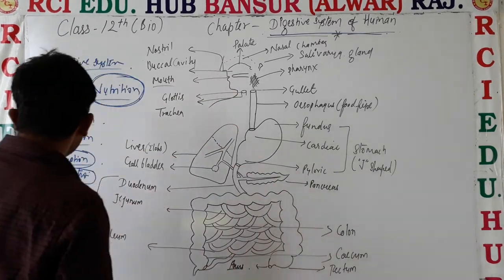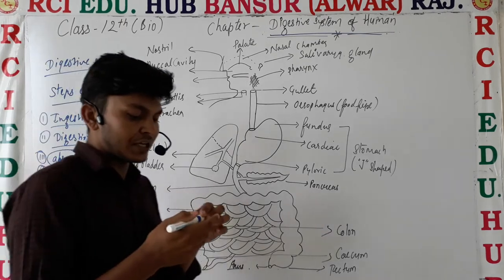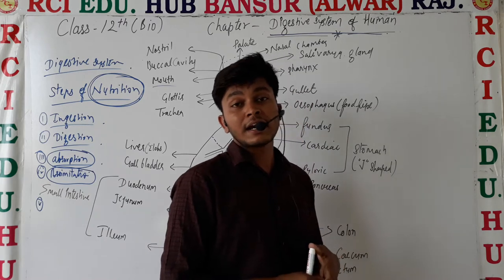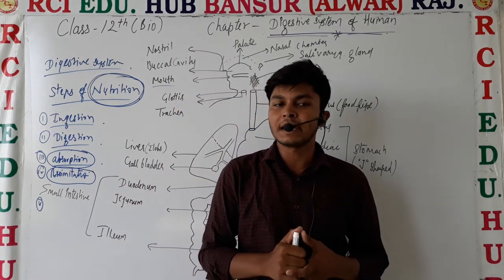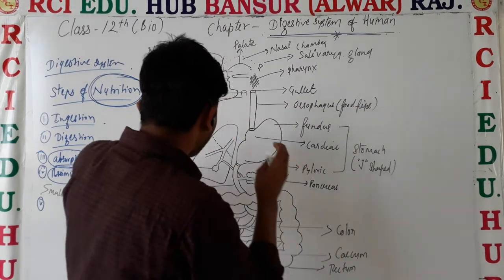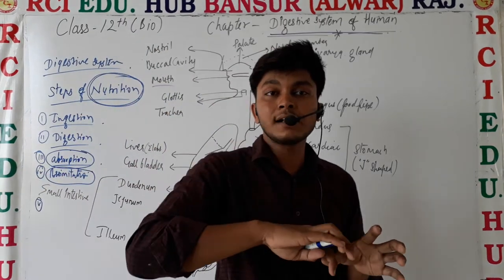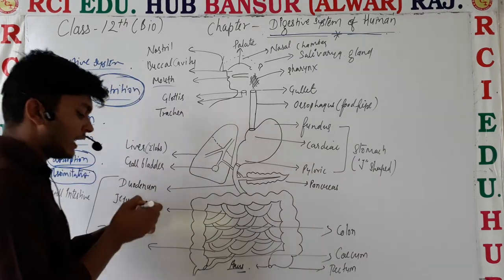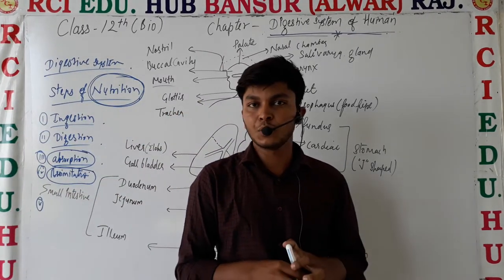The fifth and last step is egestion. The undigested food particles and food materials that were not digested are released by the anus. That process is known as egestion, which we will also discuss later on.